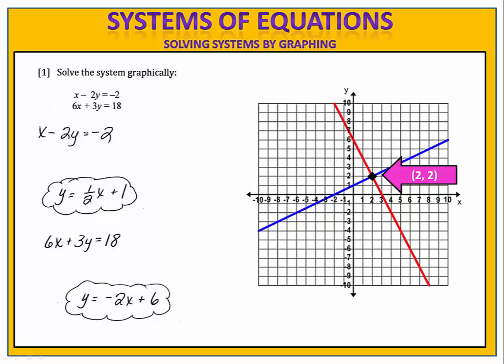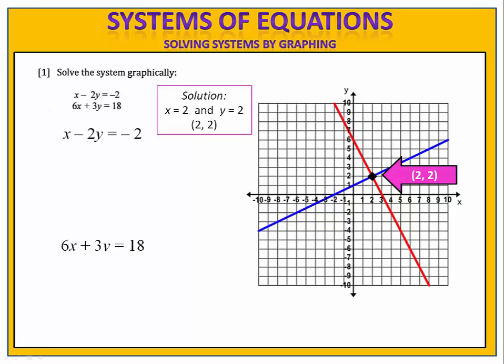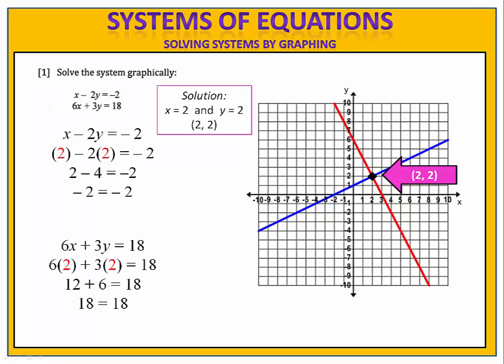That's the solution to the system of equations. The value (2, 2) are the only pair of numbers that will make both equations true simultaneously. If we look at the equations and we substitute the 2 in for x and the 2 in for y, and we work through the numbers, we see that indeed this solution does work in both, which means it's in the solution set for both of the equations.